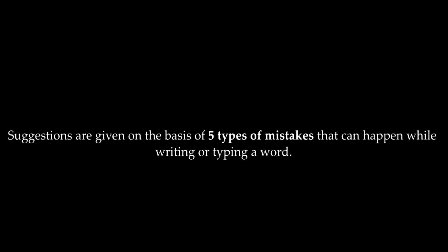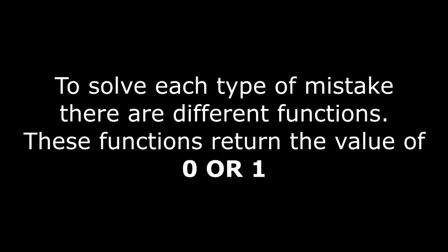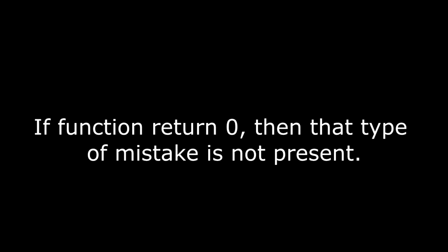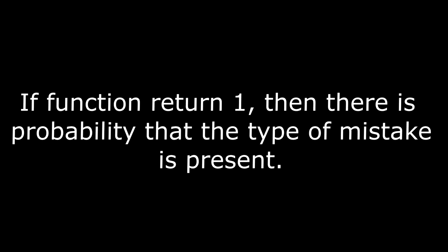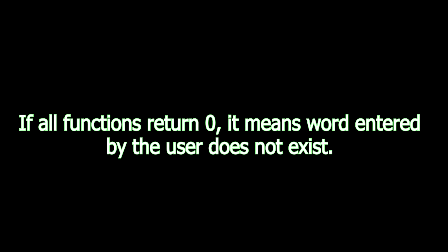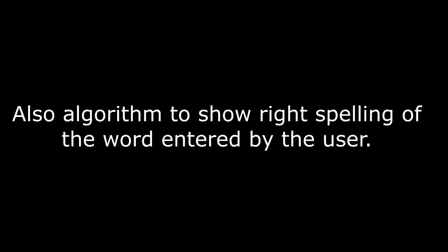If the value of correct is zero, we have to print suggestions for correct spellings. Suggestions are given on the basis of five types of mistakes that can happen while writing or typing a word. For each type of mistake there are different functions, and these functions return a value of zero or one. If the function returns zero, that type of mistake is not present; if it returns one, there is a probability that type of mistake is present. Call all five functions to show suggestions and check the value returned. If all functions return zero, the word entered does not exist.